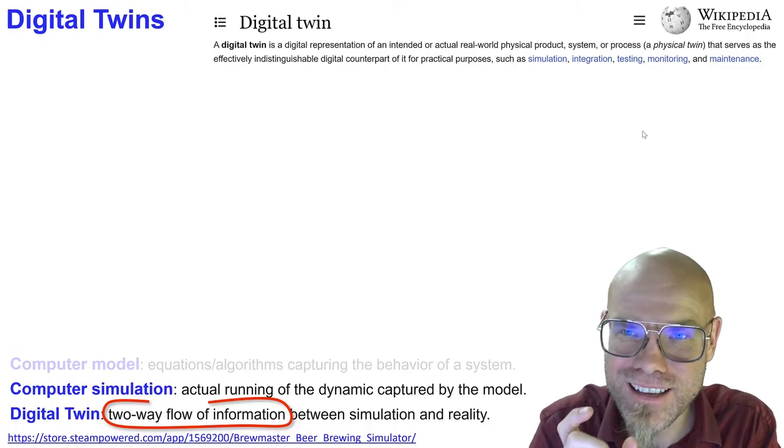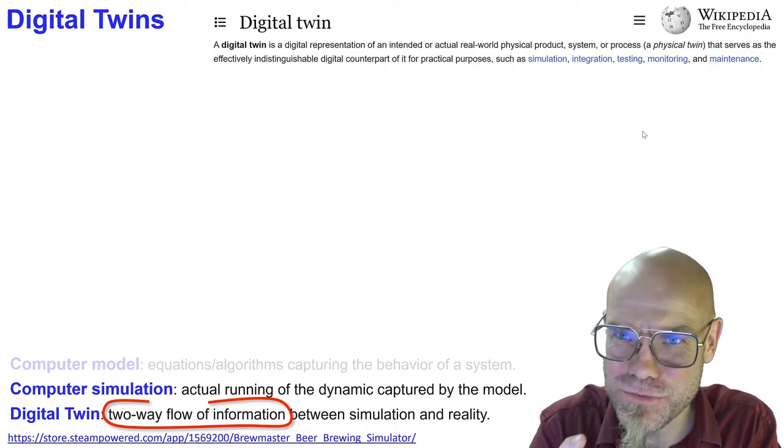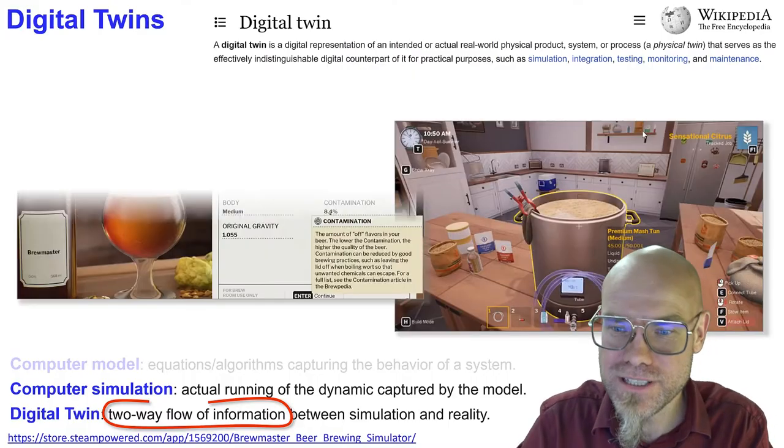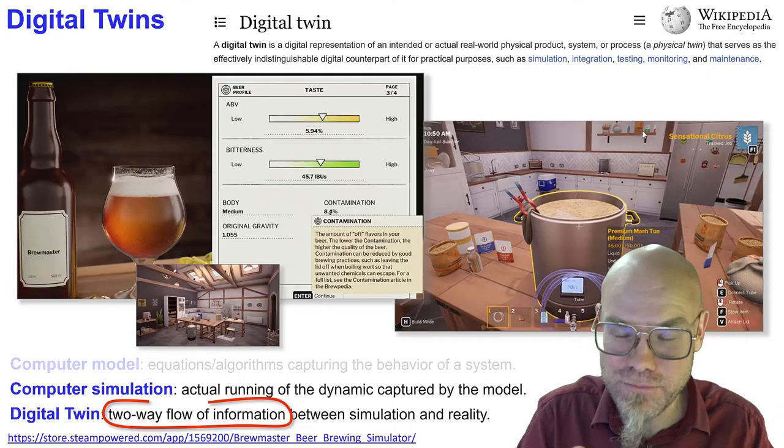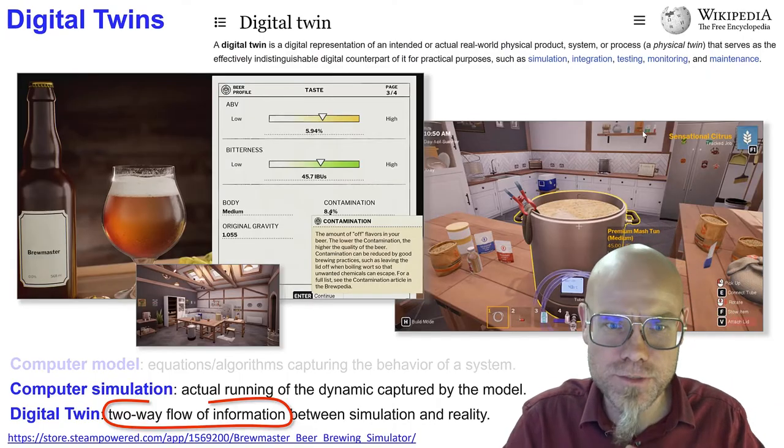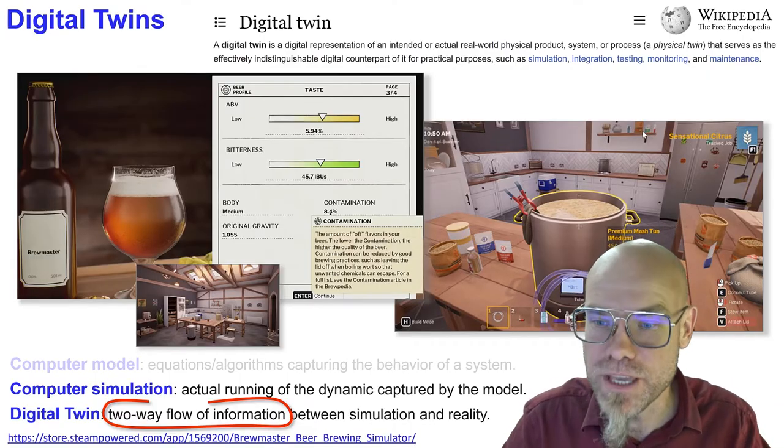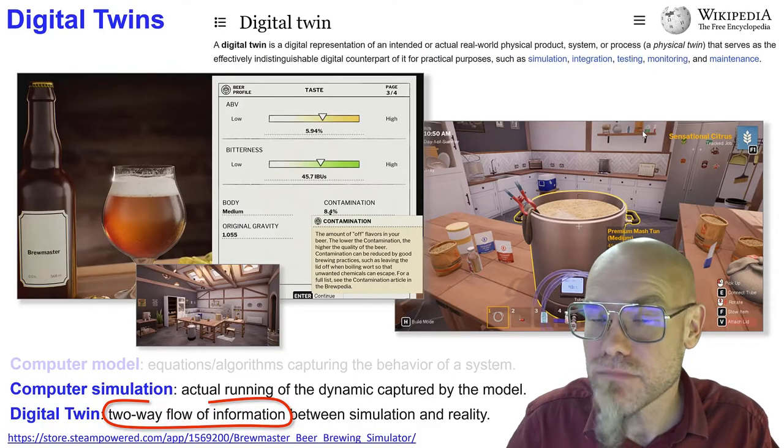The very important distinction here is that it's a two-way flow of information. So it's not a video game. That's the distinction between a digital twin and a video game. For example, here, a very important digital twin, beer brewing. And you can hear basically, well, it could be a video game. It could just be a video game of beer brewing. And then you can do that and that's fine.